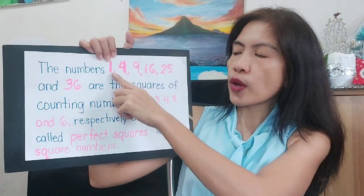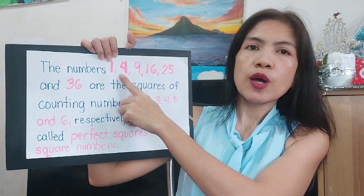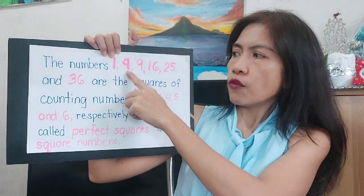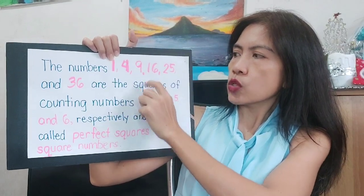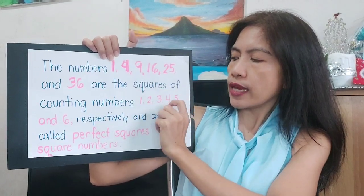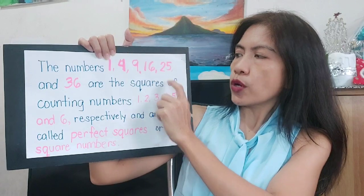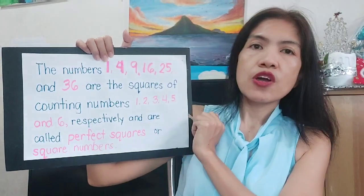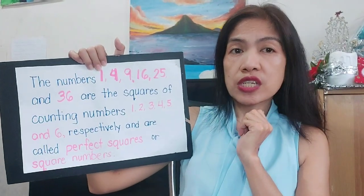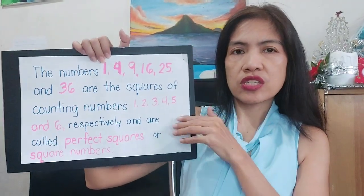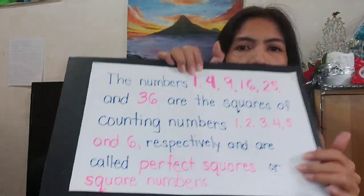So the square root of 1 is 1, the square root of 4 is 2, the square root of 9 is 3, 16 gives 4, 25 gives 5, and 36. So what does it mean?